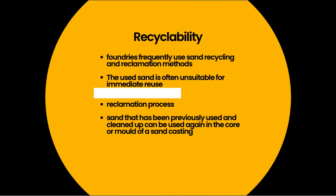Foundry sand used in sand casting can be recycled and repurposed throughout the process. Following the shakeout procedure — in which the sand mold is disassembled and the casting removed — used sand is often unsuitable for immediate reuse. It may go through a reclamation process using mechanical techniques to break up sand clusters, remove metal particles, and separate sand from remaining binder ingredients, including attrition, scrubbing, and sieving. Sand that has been cleaned can then be reused in the core or mold of a new sand casting project, reducing demand for new sand and minimizing waste production.